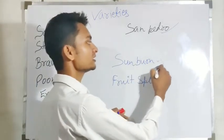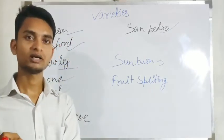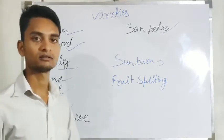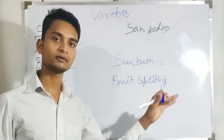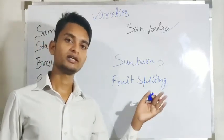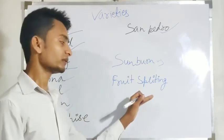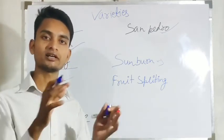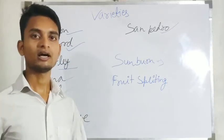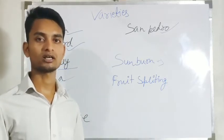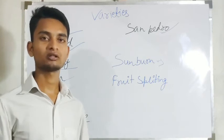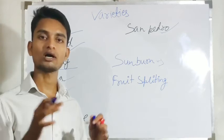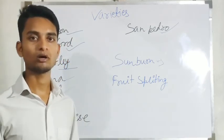This disease is created by excess of pruning. Fruit splitting is also a physical disorder. It occurs because of sudden atmospheric change and soil moisture variation.